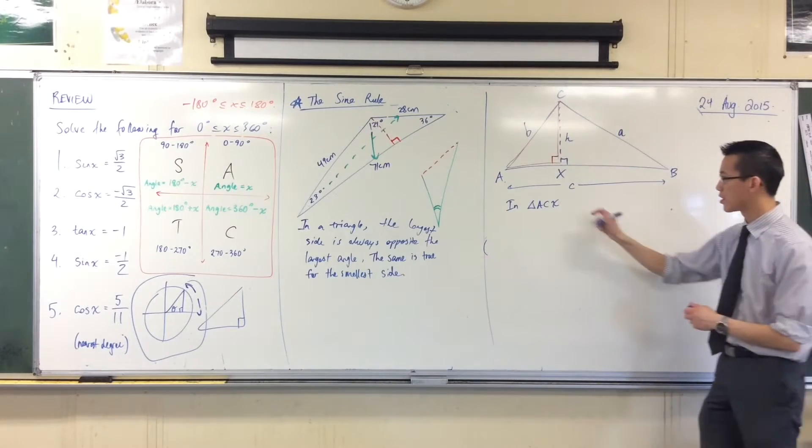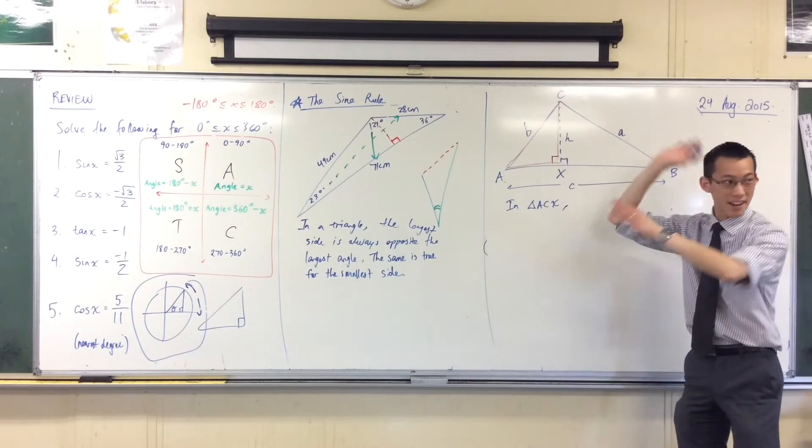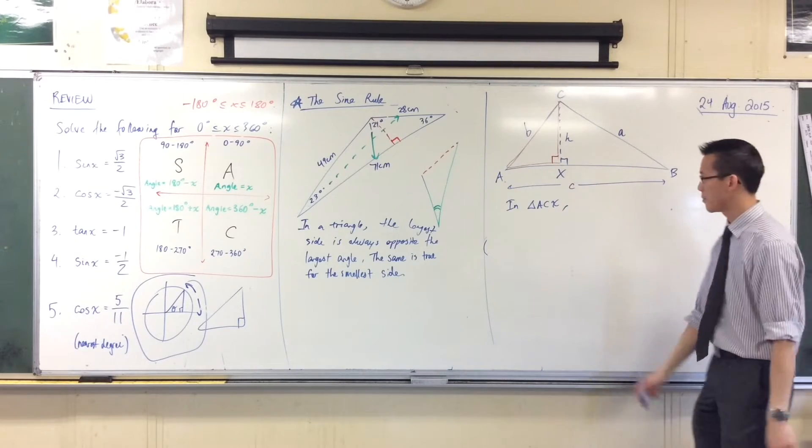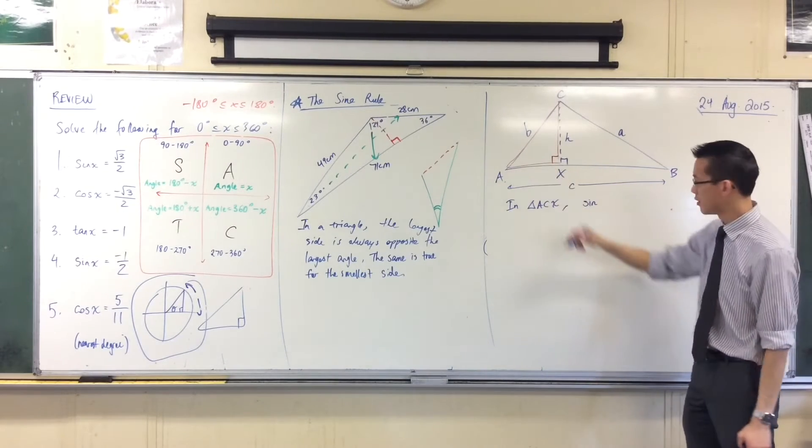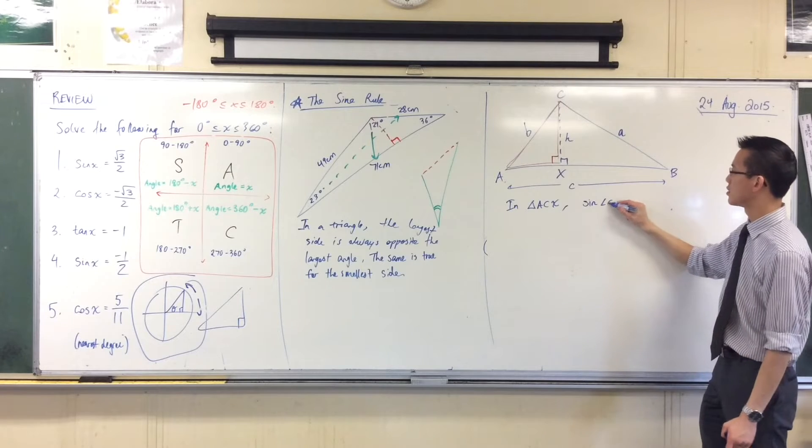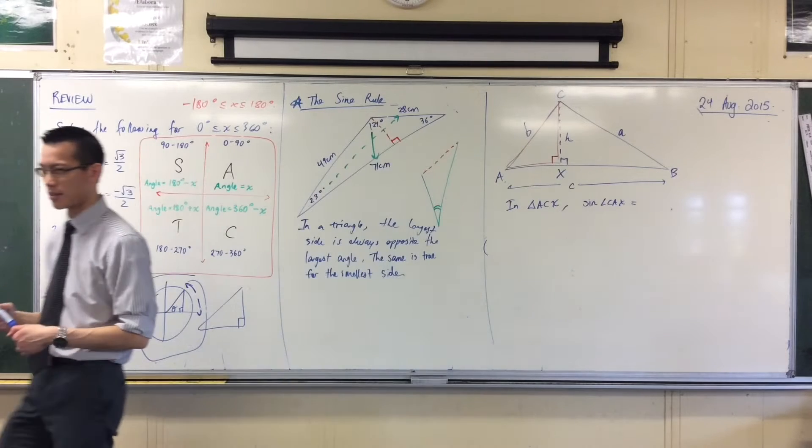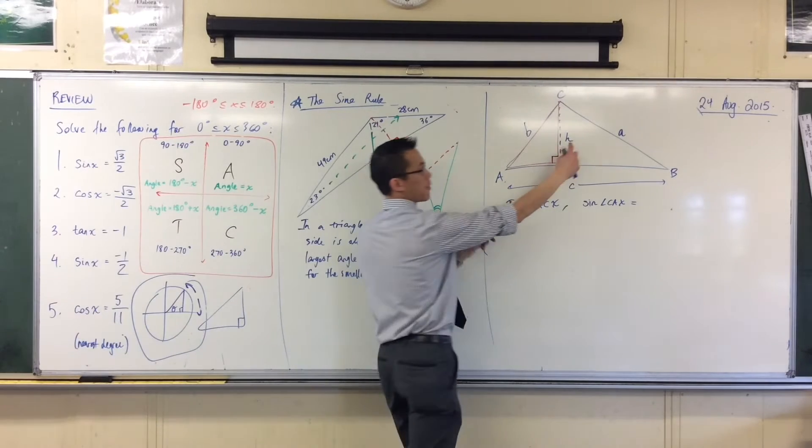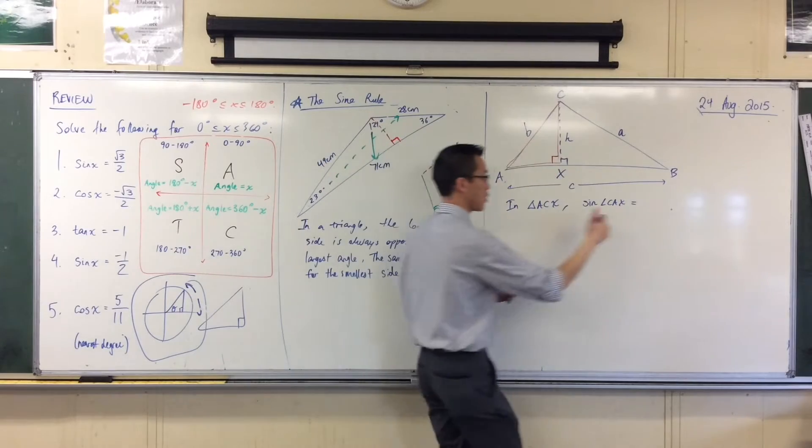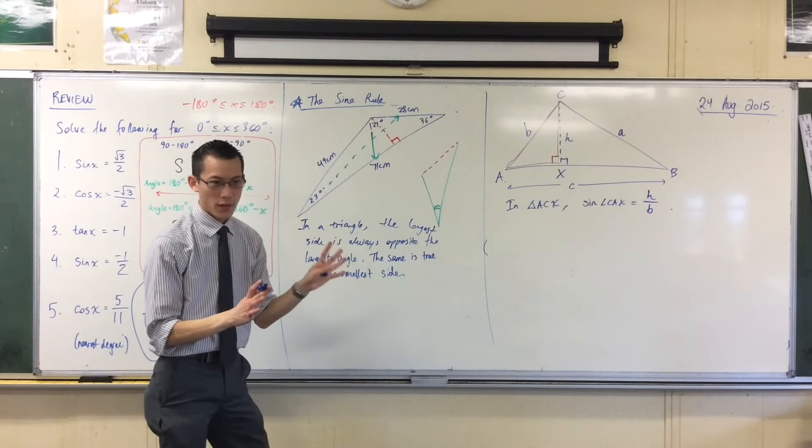Alright, so in this triangle, because it's right-angled, I can say sine, cos, tan, I can use my SOHCAHTOA business, opposite, hypotenuse, adjacent, all that. For reasons that will become clear in a second, I'm going to say sine of this angle in the corner, sine of CAX. Think SOHCAHTOA: opposite on hypotenuse. What's sine of CAX going to be equal to, based on the lengths that I've named? It's going to be opposite on hypotenuse. That's h over b. So I have this. So that's fine.